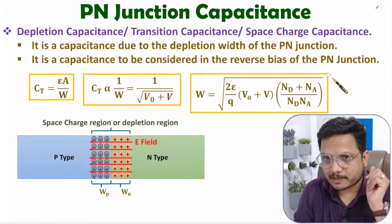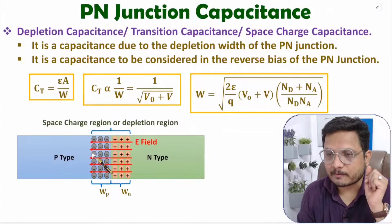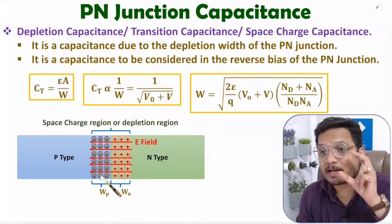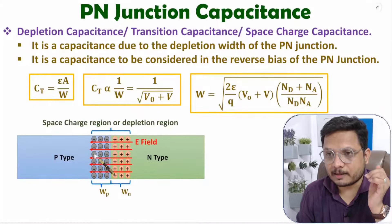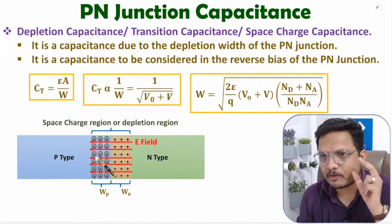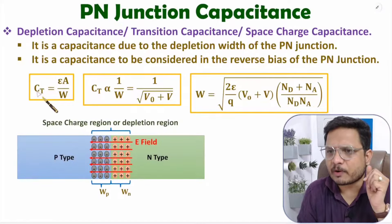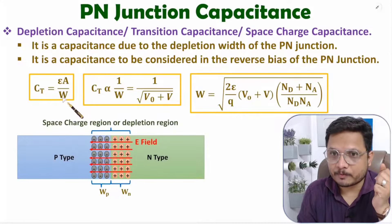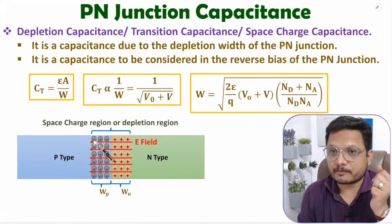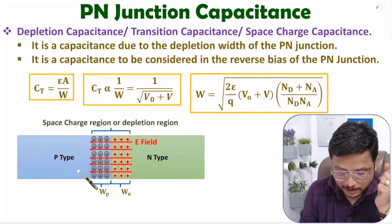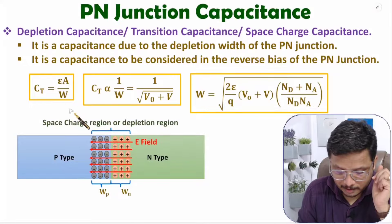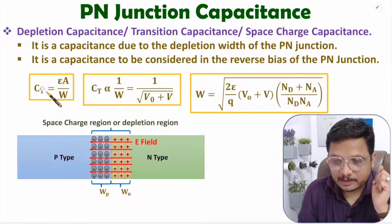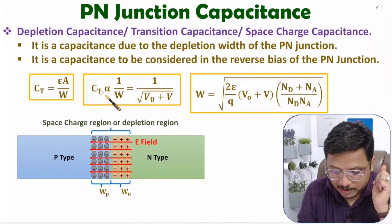In reverse bias, the width of the depletion region will increase, and that width depends on how much reverse bias voltage we apply. As you increase reverse bias voltage, the depletion region width will increase. The basic capacitance formula is C = εA/W, where A is the cross-sectional area of the p-n junction and W is the width. As you increase reverse bias voltage, this capacitance value will decrease because width increases.